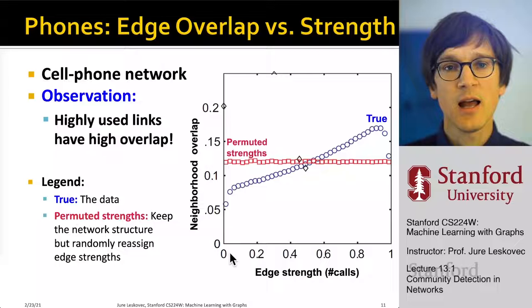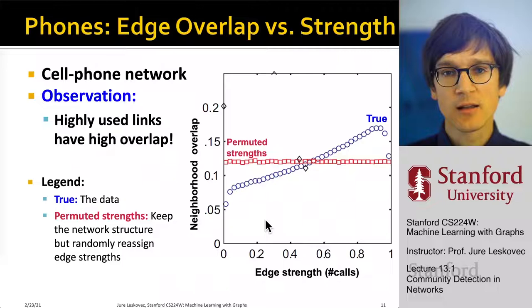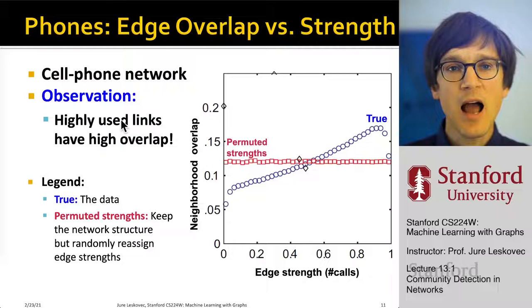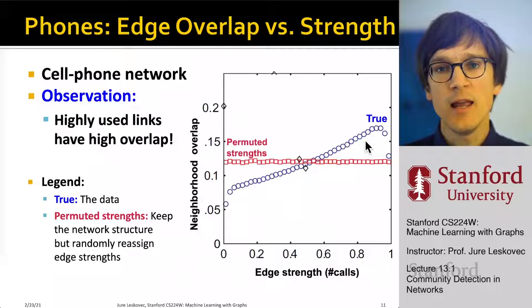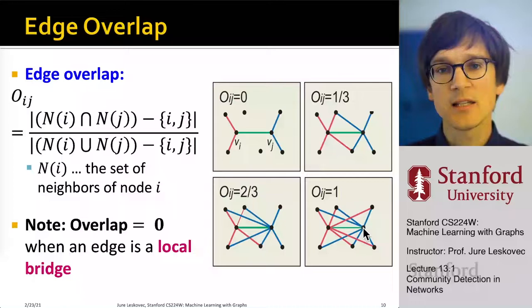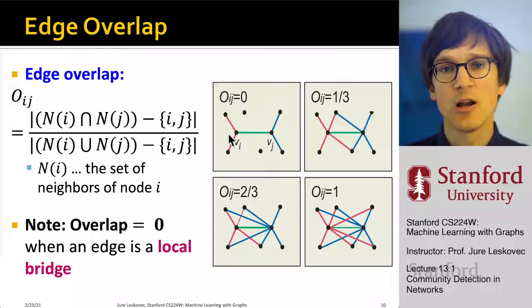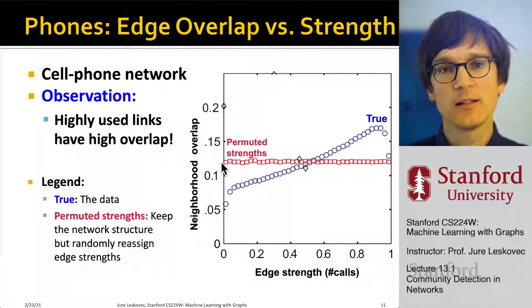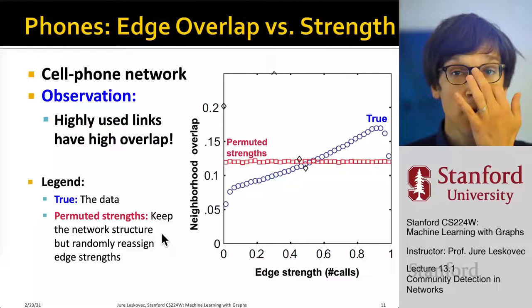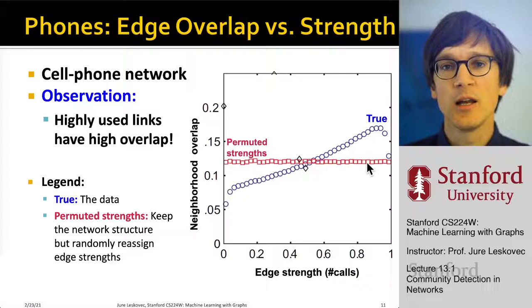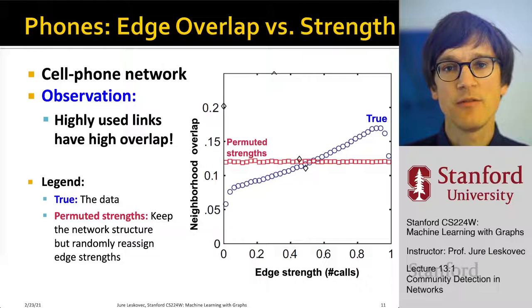Here is the result: edge strength in terms of number of phone calls is plotted against neighborhood overlap. The real data shows that the more phone calls, the higher the overlap — links with a high number of phone calls have high overlap, and links with fewer phone calls have smaller overlaps. A null model where edge strengths are randomly reassigned shows no such relationship, serving as a safety check. The conclusion is: the bigger the overlap, the stronger the edge interpersonally.